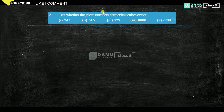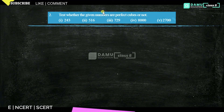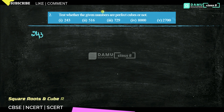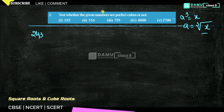In this module we are going to discuss whether the given numbers are perfect cubes or not. We have to check if the given numbers are perfect cubes. The concept is: if a³ = x, then a equals the cube root of x. We will use the prime factorization method. So let's take 243 — it is not divisible by 2, so we try dividing by 3.